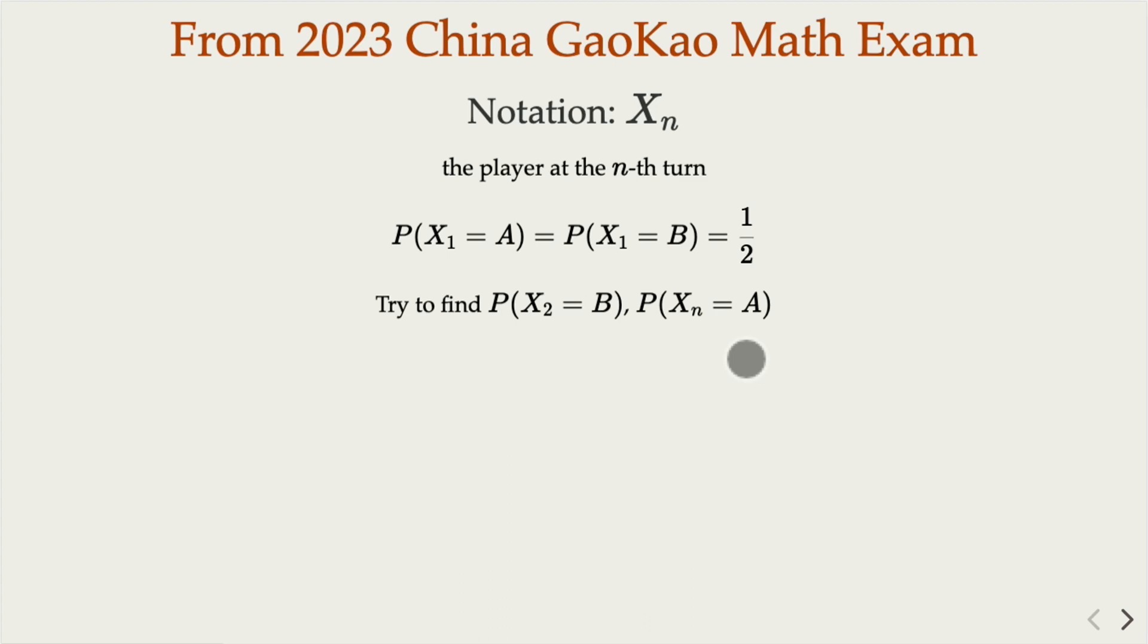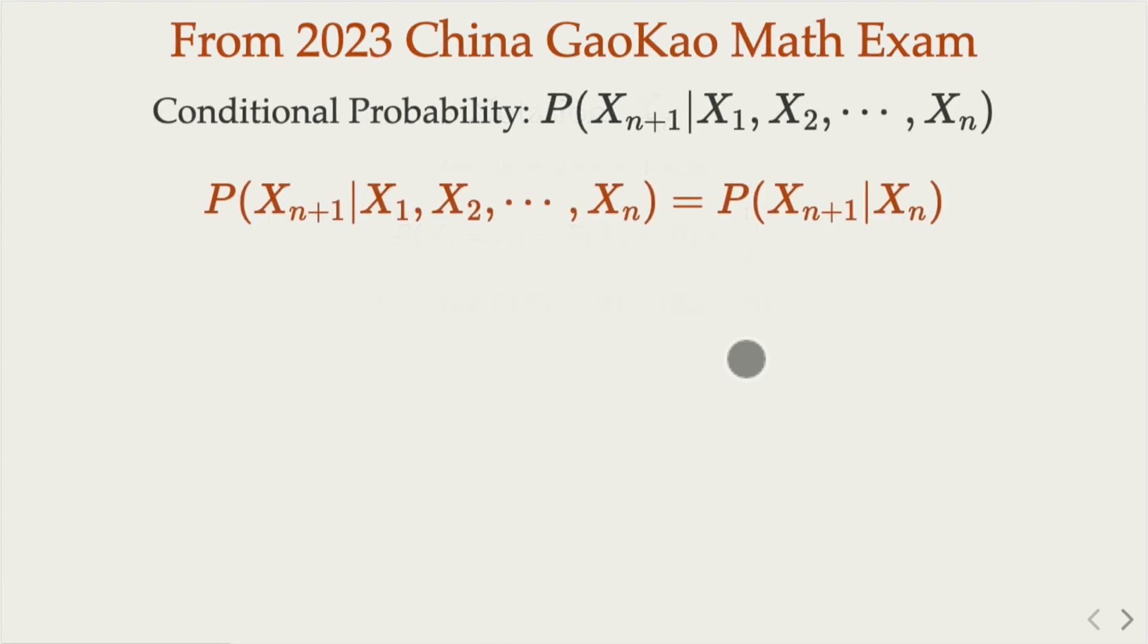In this game, we know that the probability of the player at X_{n+1} times depends on the history from the first throw, second, up to n. But in our case, according to the rules of the game, the history doesn't really matter. What matters is the current one.